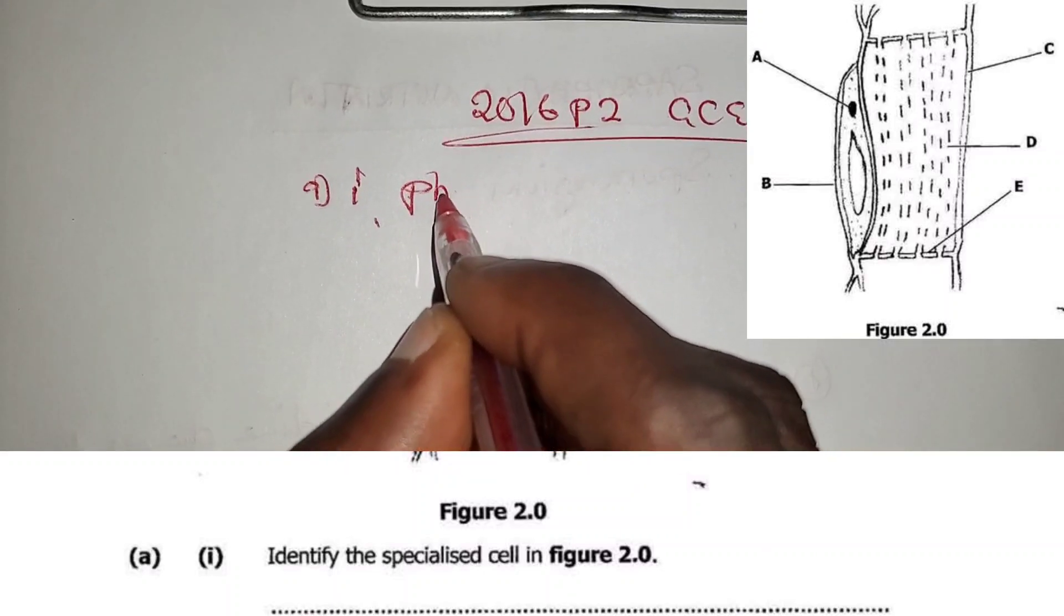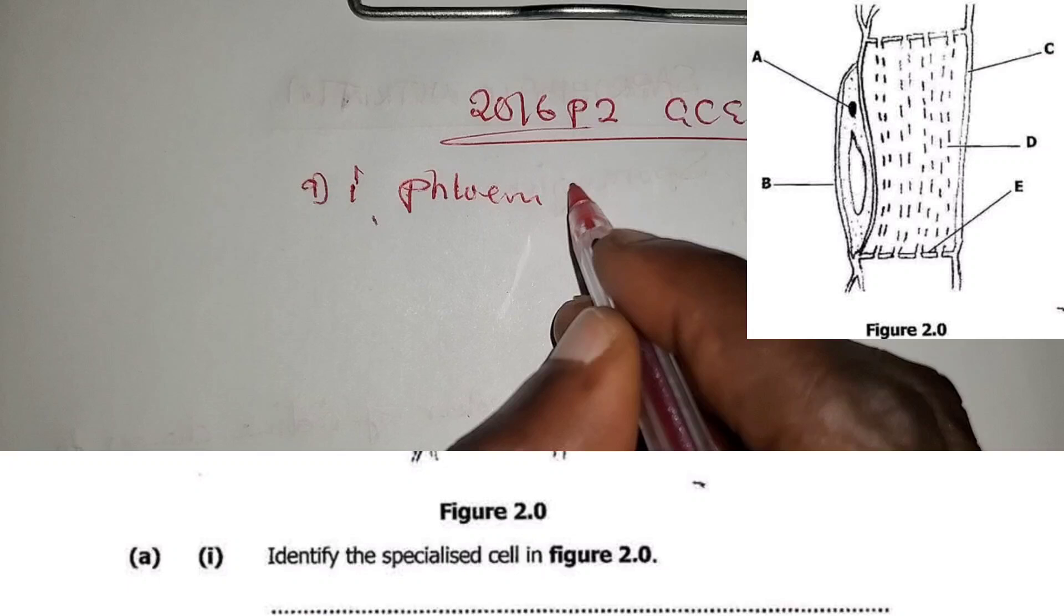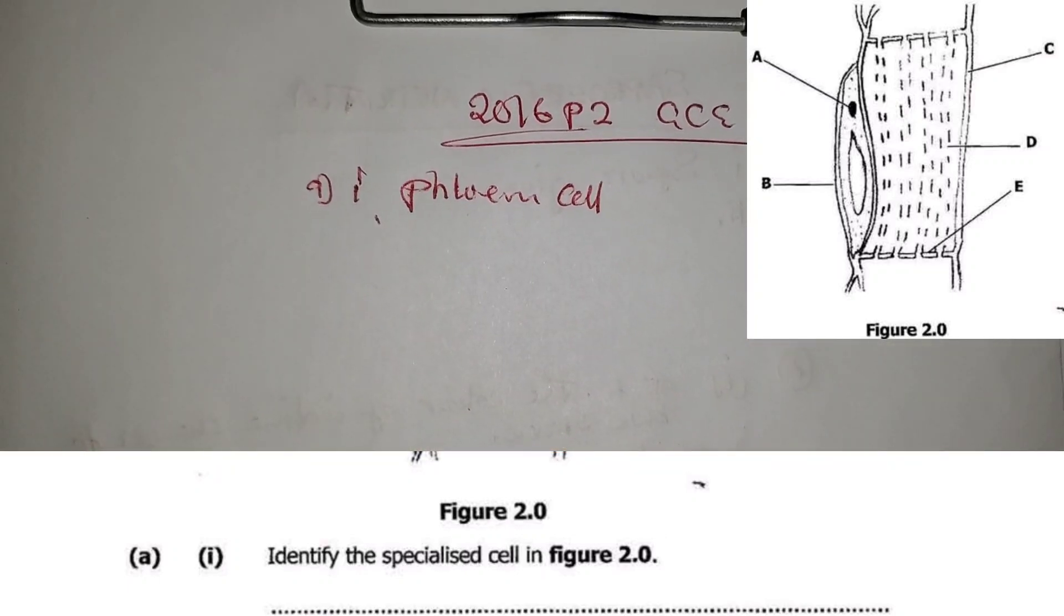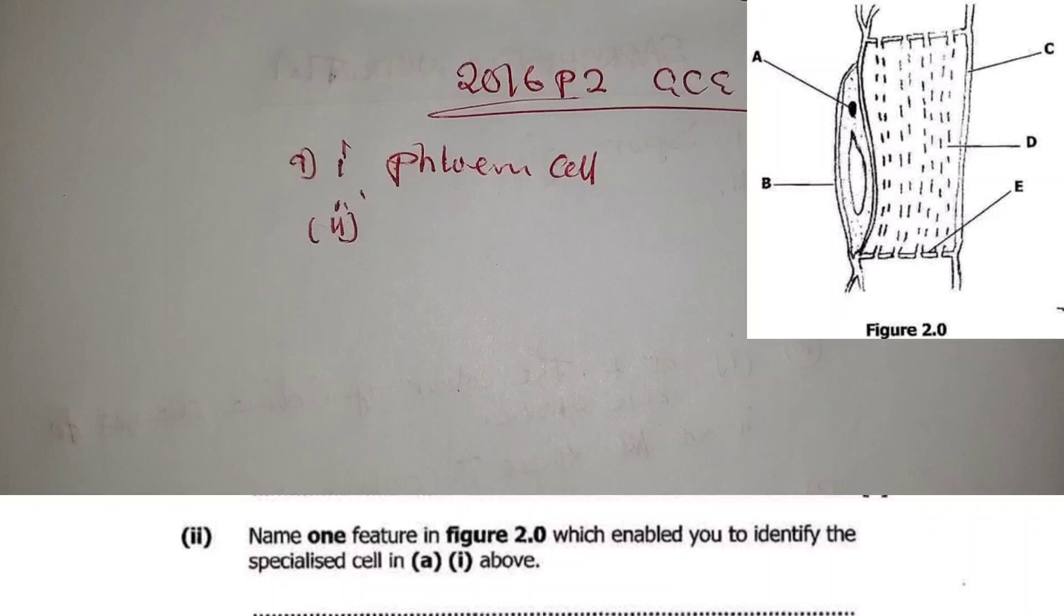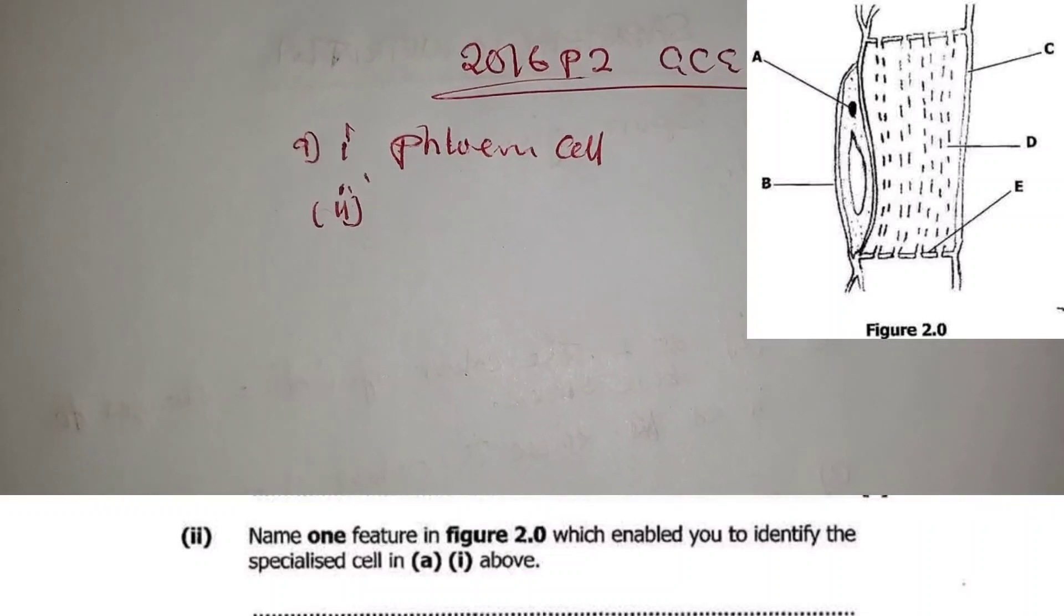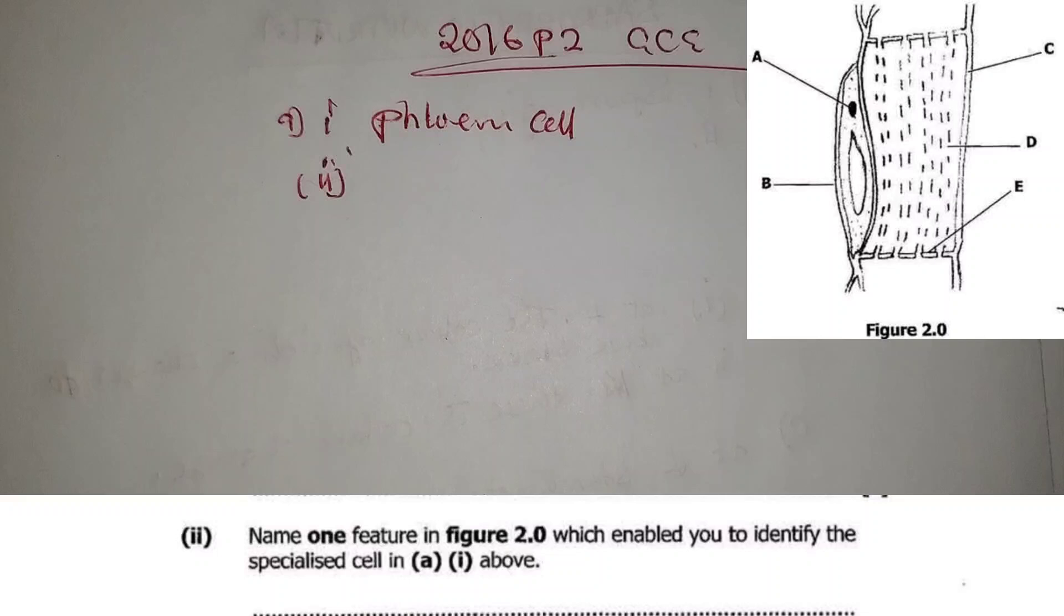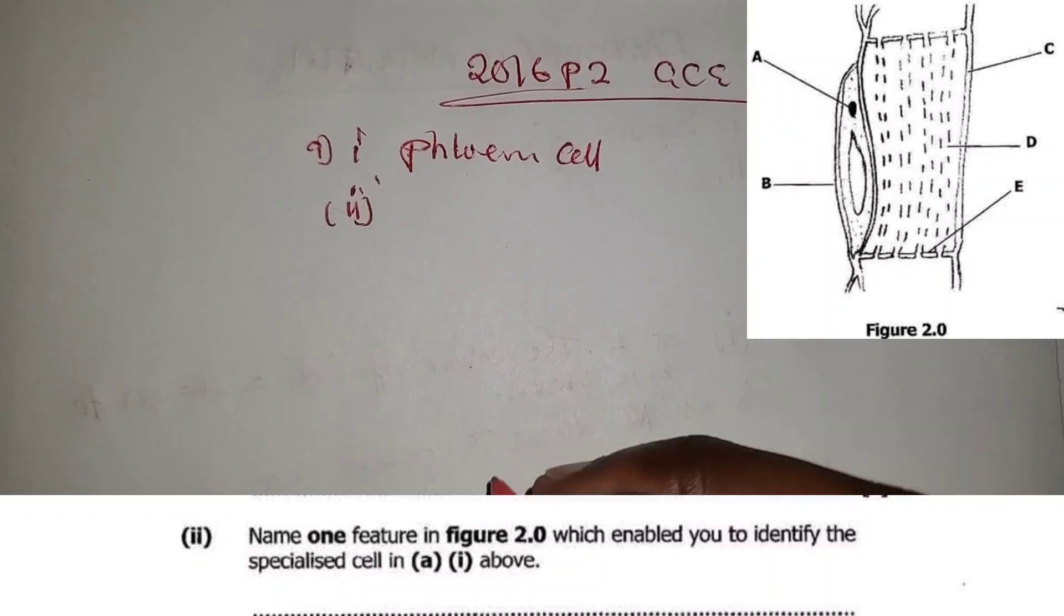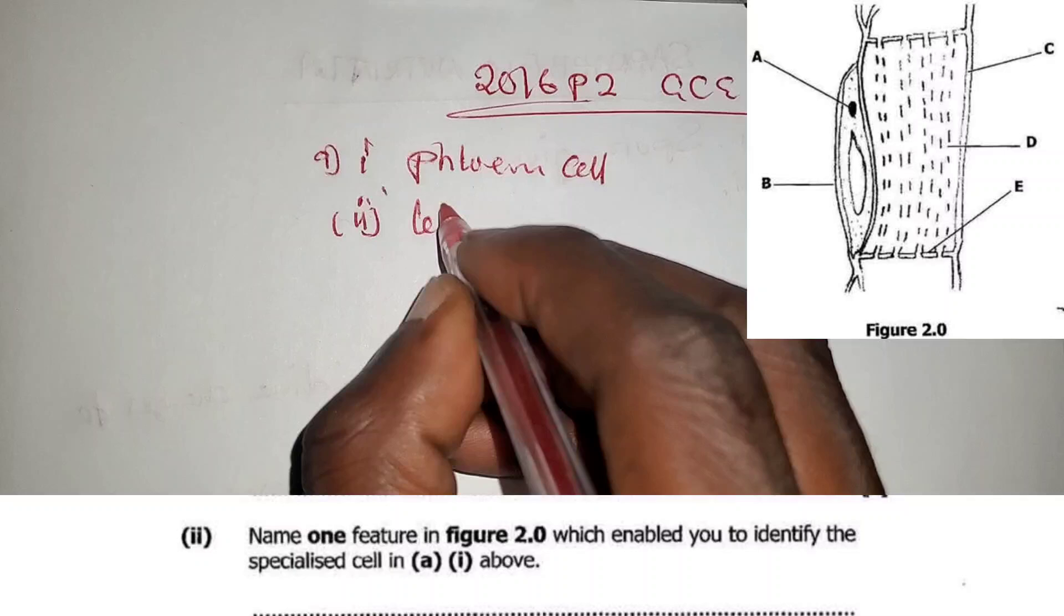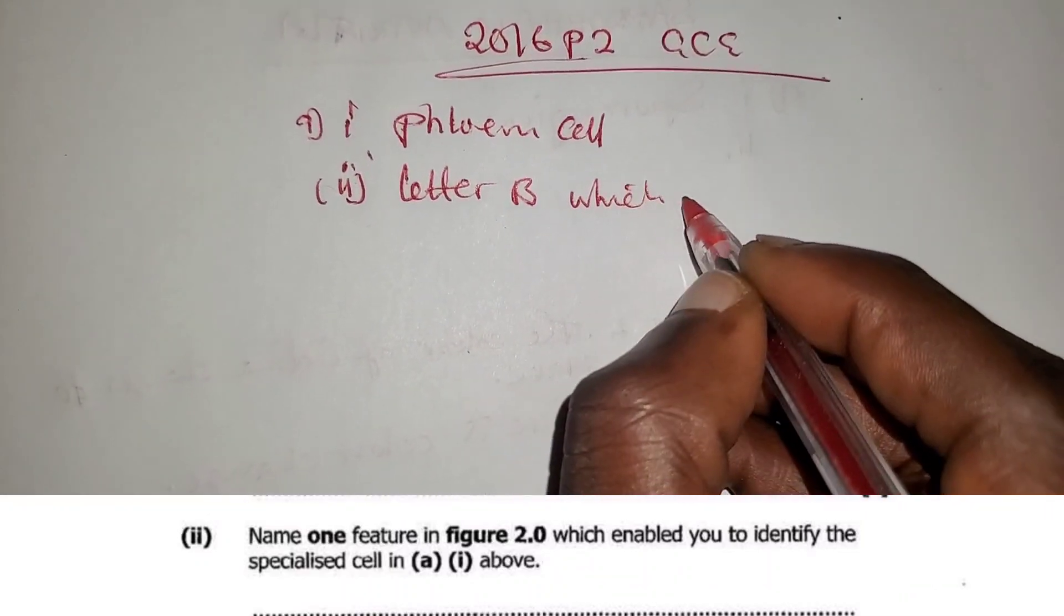Question A(ii): Name one feature in Figure 2.0 which enables you to identify the specialized cell. The feature is the companion cell, which is letter B, a companion cell.